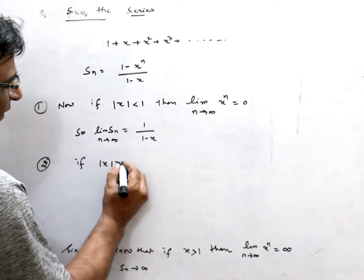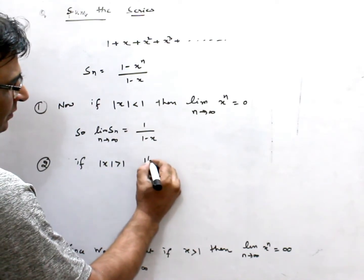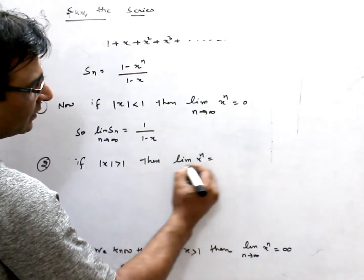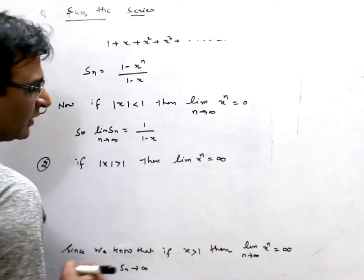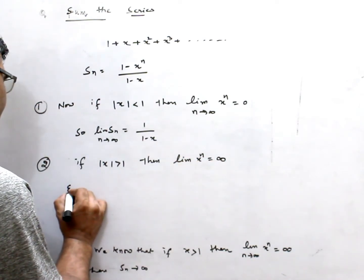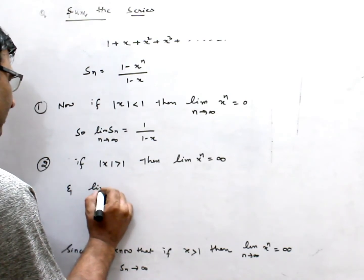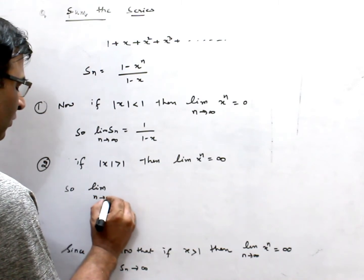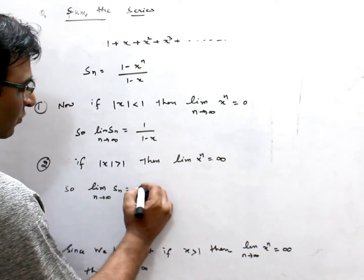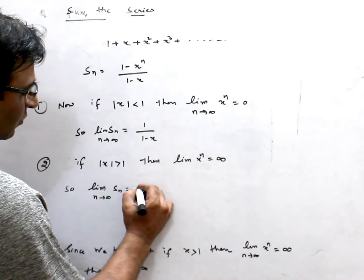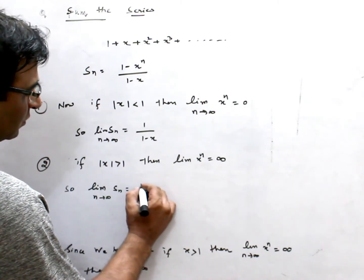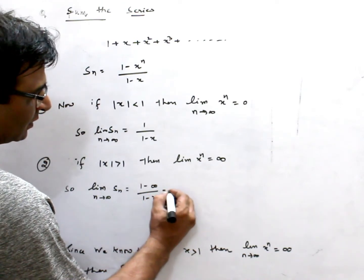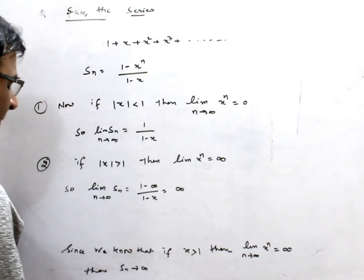If x is greater than 1, then the limit of x to the n is infinity. So the limit as n approaches infinity of Sn equals (1 minus infinity) divided by (1 minus x), which is infinity. The series diverges.